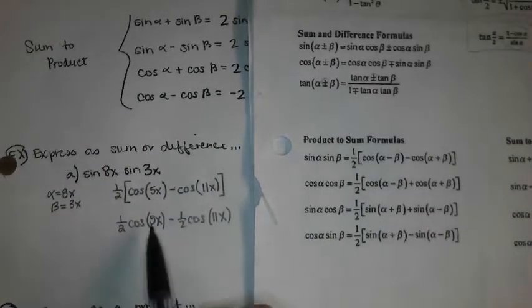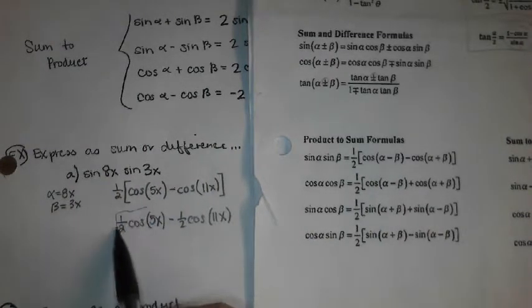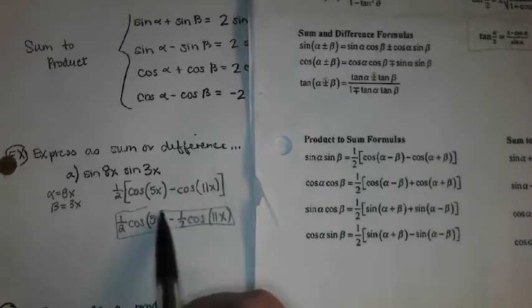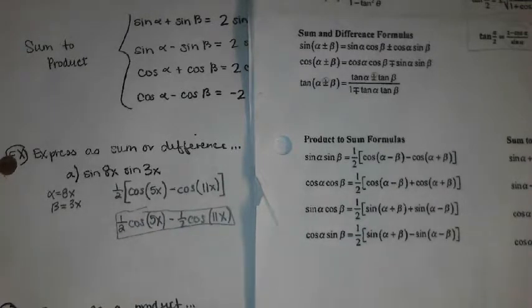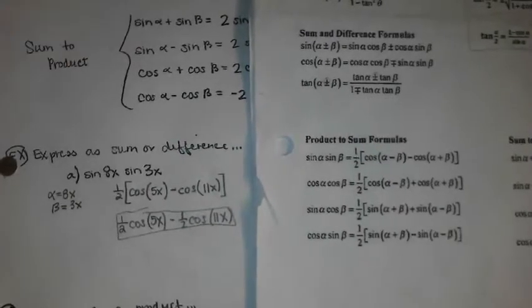And you can distribute your one half, so one half cosine of 5x minus one half cosine of 11x. So there is our original product expressed as a sum or difference in this case.